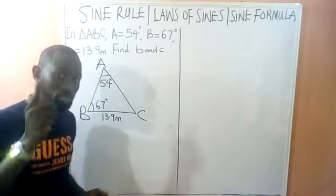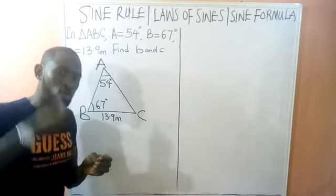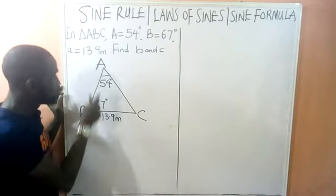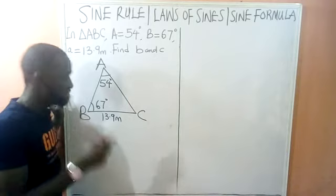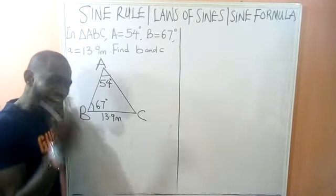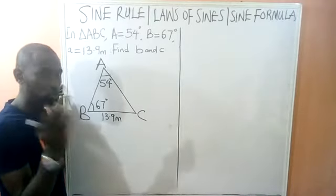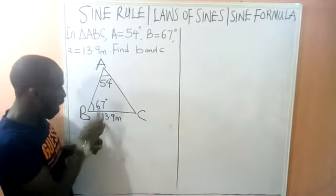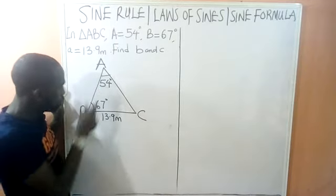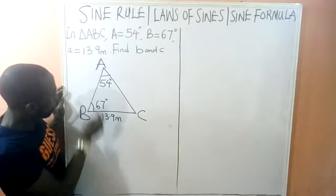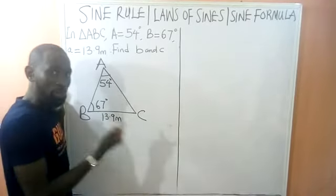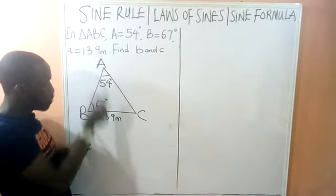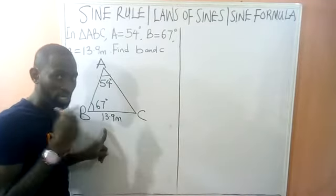As I said in the first video, there are two conditions — either one must be satisfied before we can apply the sine rule. One condition says: if two angles are given and one side that is facing one of the given angles is known, we can use the sine rule. Here we have two angles given, and small a is facing angle A, so the condition is satisfied.